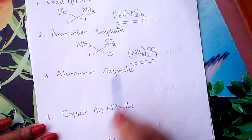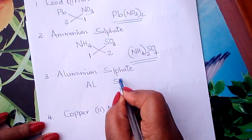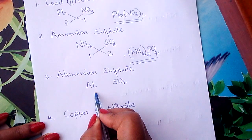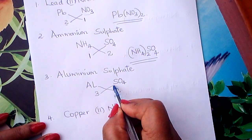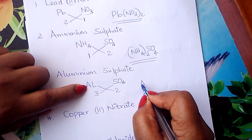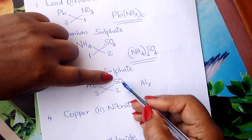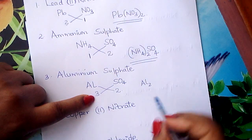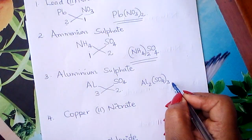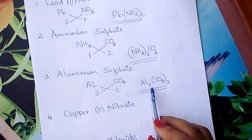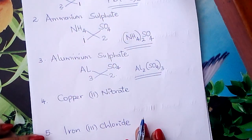We move on to aluminium sulfate. The symbol for aluminium is Al. Sulfate is SO₄. Valency for aluminium is 3, valency for sulfate is 2. Interchange: aluminium is an element, so you write Al₂. Sulfate is a radical — it is taking 3, so you put it inside a bracket: (SO₄)₃. That is the formula of aluminium sulfate: Al₂(SO₄)₃.